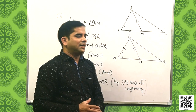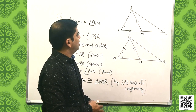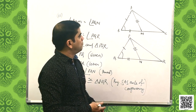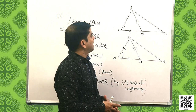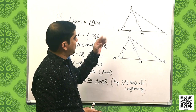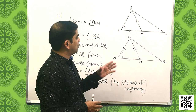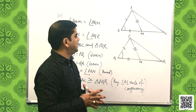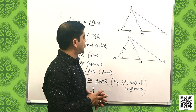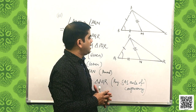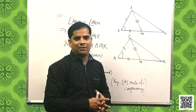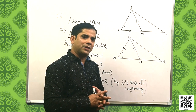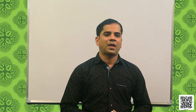In this way we have proved that triangle ABM is congruent to triangle PQN and triangle ABC is congruent to triangle PQR. Hope you have understood this.